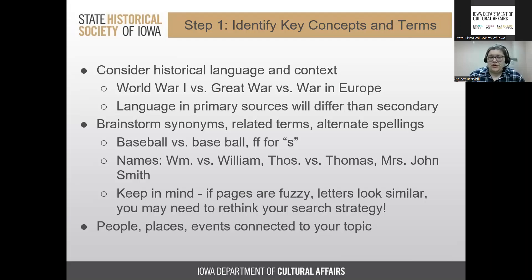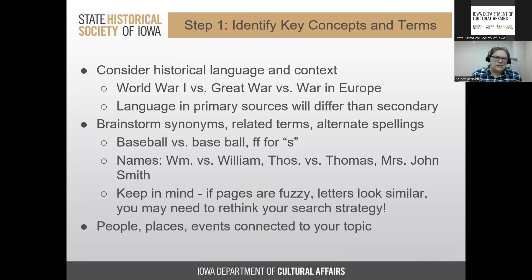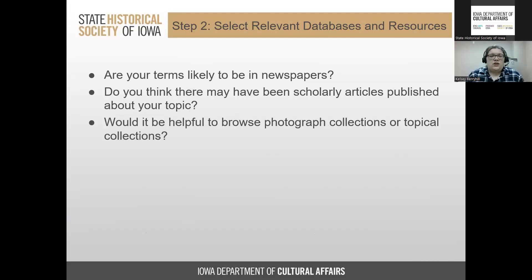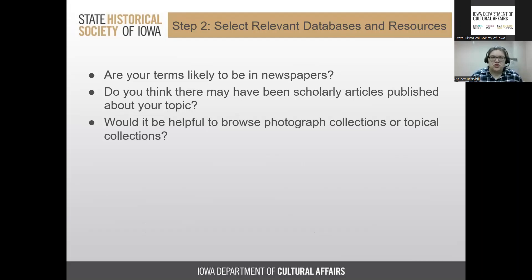For newspapers especially, if pages are fuzzy or letters look similar — M's, N's, and U's; P's and Q's — you may need to rethink your search strategy. Make a list of different people, places, and events connected to your topic and search for all of them. Then select relevant databases: are your terms likely to be in newspapers? Are there scholarly articles in the Annals or Palimpsest? Would browsing photograph collections yield useful keywords for other searches?